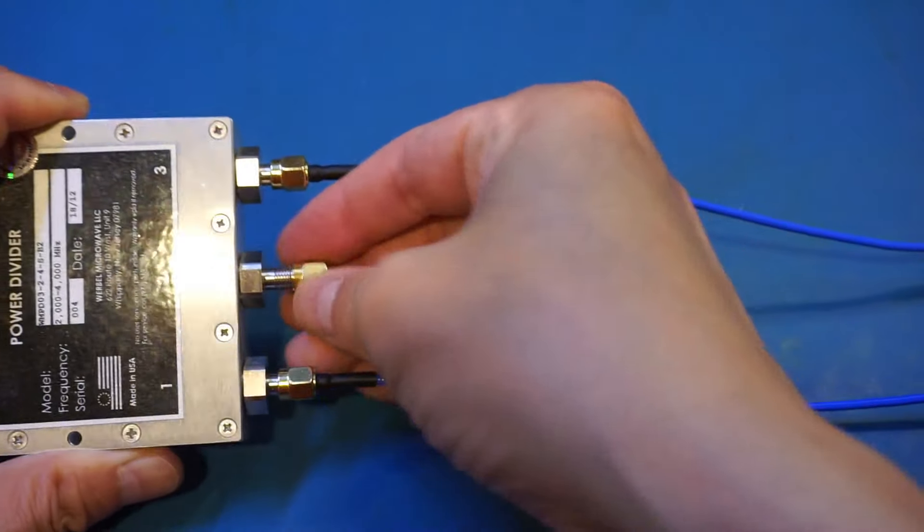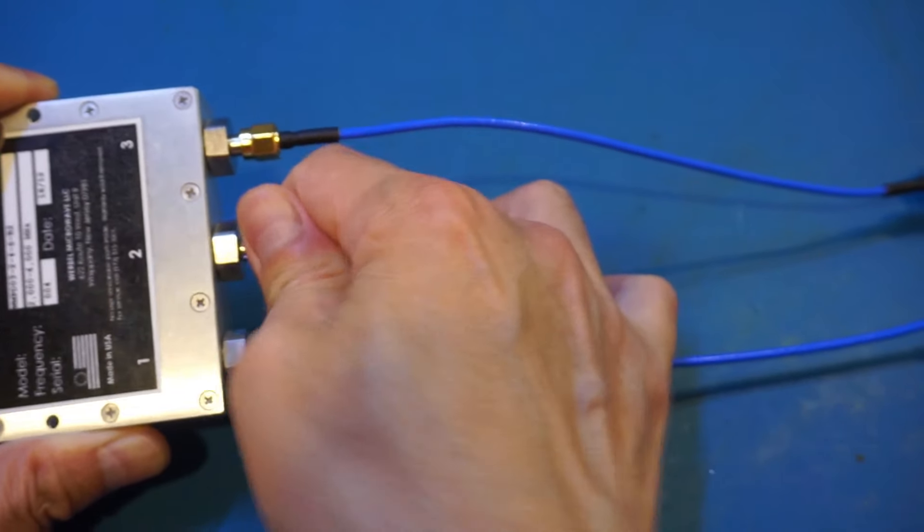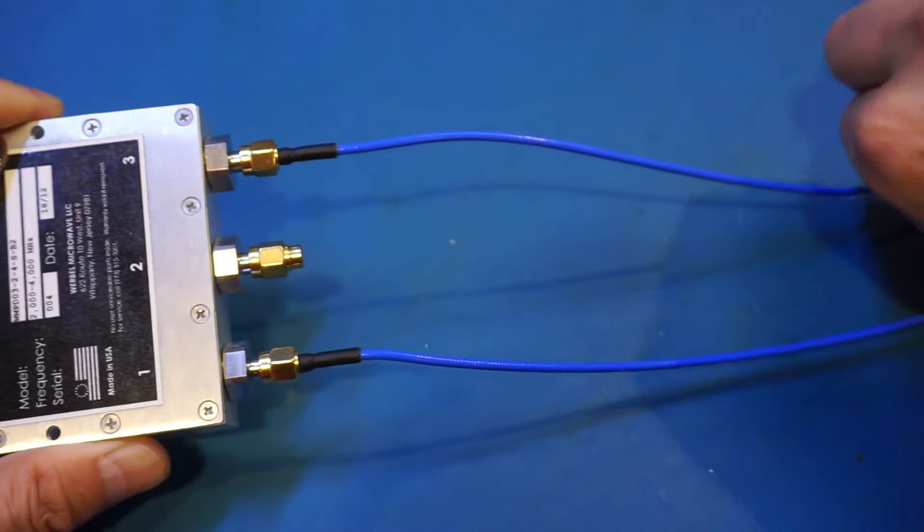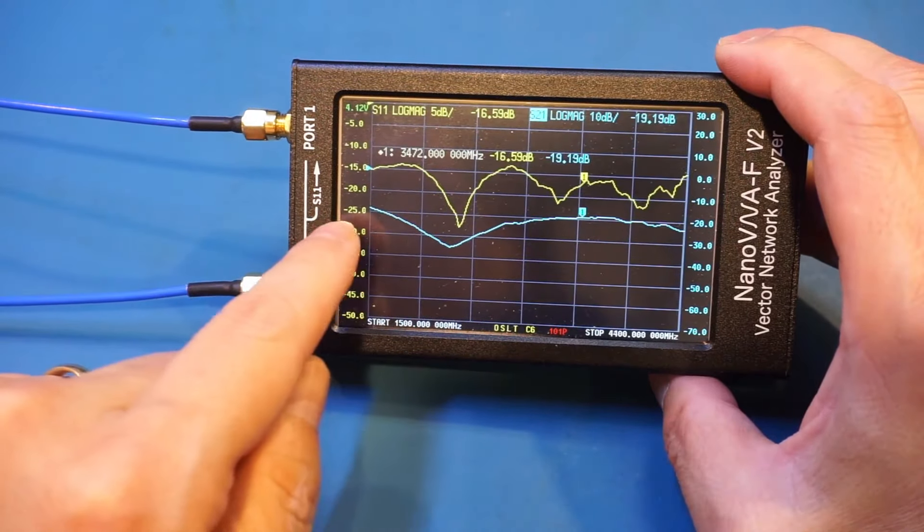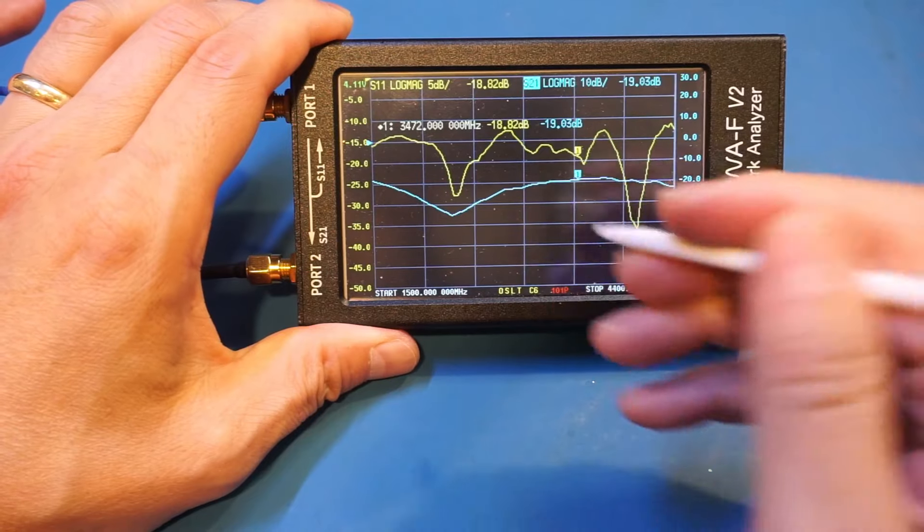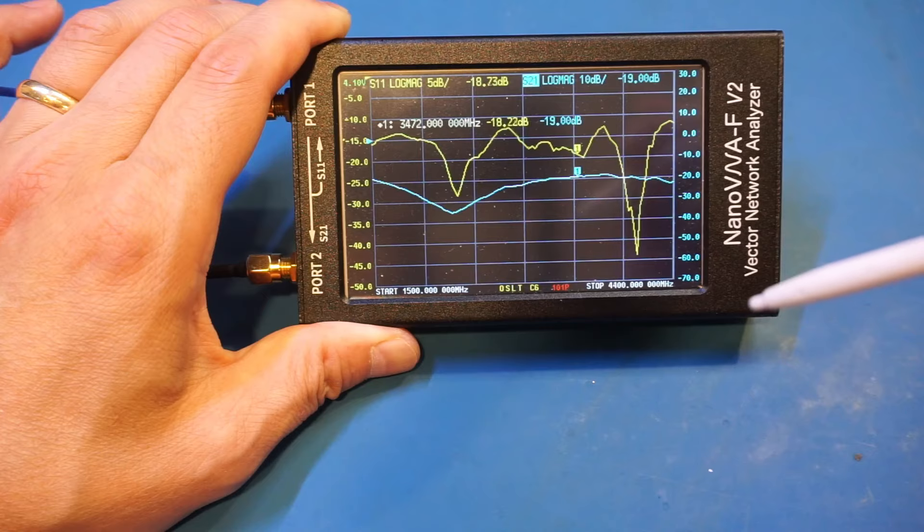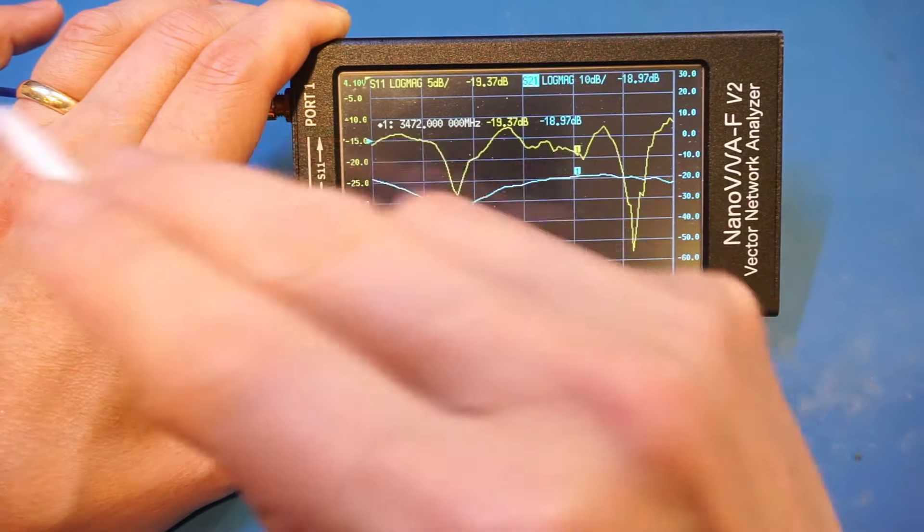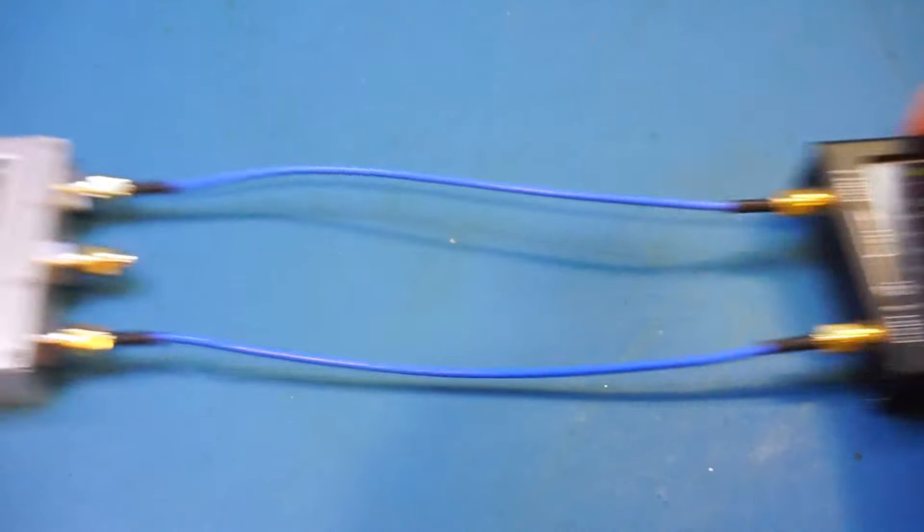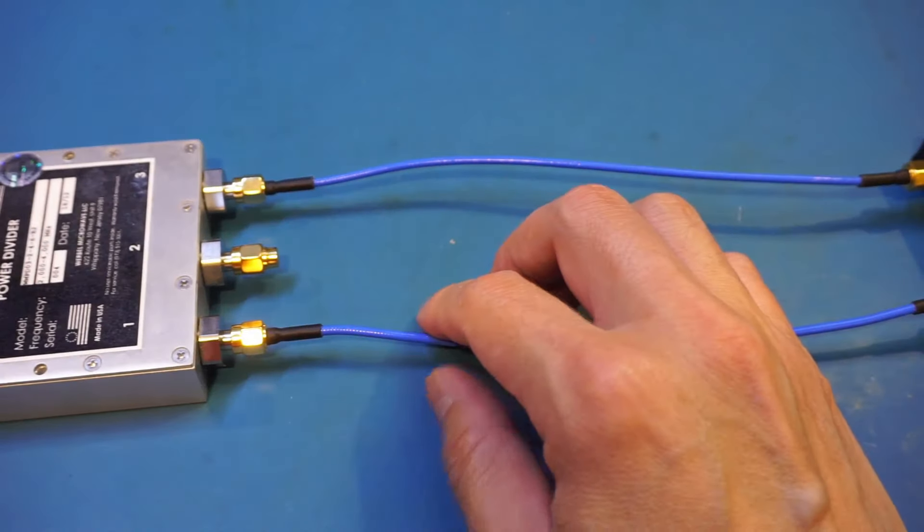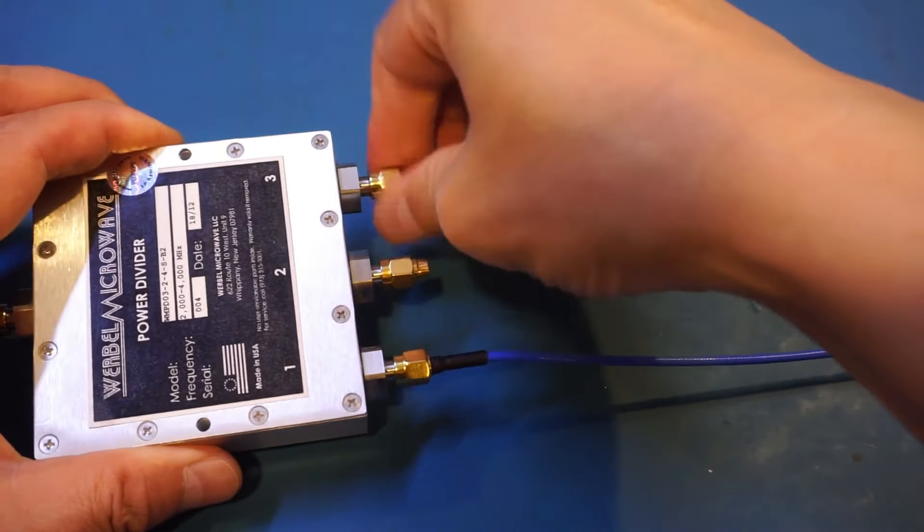So let me terminate port two. You can see indeed the shape of the S21 changed quite a bit actually because I think we have a trough here and now we only have one. But nevertheless we have very good isolation as you can see between any of the two ports here. What I want to take a look next is return loss looking into this input port. So for that I'm just going to terminate all three output ports.